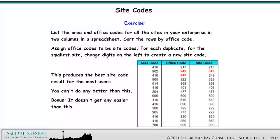Here is an exercise. List the area and office codes for all the sites in your enterprise in two columns in a spreadsheet. Sort the rows by office code. Assign office codes to be site codes. For each duplicate, for the smallest site, change digits on the left to create a new site code. This produces the best site code result for the most users — you can't do any better than this. Bonus: it doesn't get any easier than this.